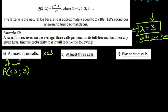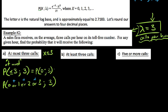P(X ≤ 3) can be written as P(X=0) + P(X=1) + P(X=2) + P(X=3), all given lambda equals three, because these outcomes are mutually exclusive. So P(X ≤ 3 | λ=3) equals the probability of zero given three, plus probability of one given three, plus probability of two given three, plus probability of three given three. We're going to look these up in the Poisson table at the back of the book.